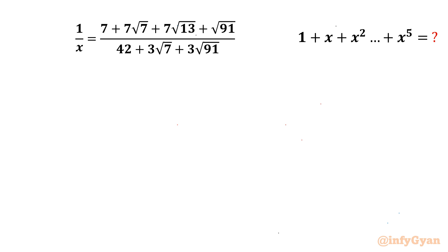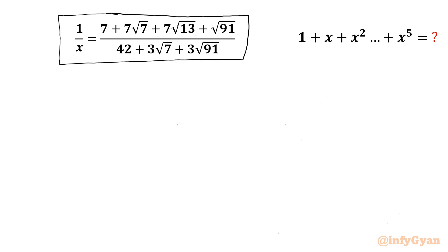Welcome back to Infigr, my dear friends. In today's video we have another very interesting question from Radicals. Here we have to evaluate the expression 1 plus x plus x squared plus x cubed plus x to the power 4 plus x to the power 5, and the given equation is 1 over x equal to 7 plus 7 root 7 plus 7 root 13 plus root 91 over 42 plus 3 root 7 plus 3 root 91. So let us get started.